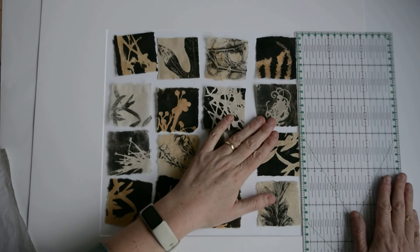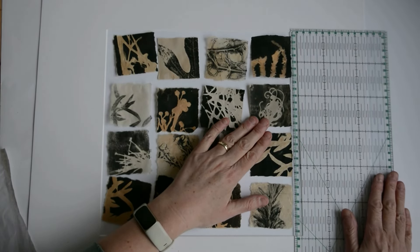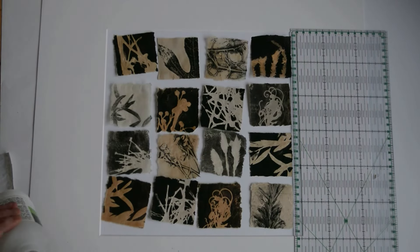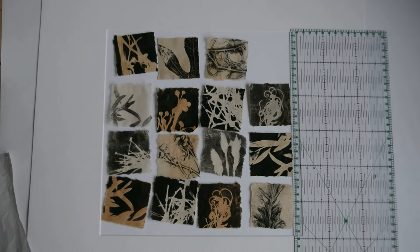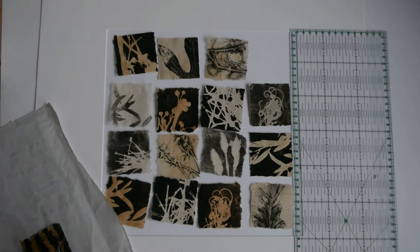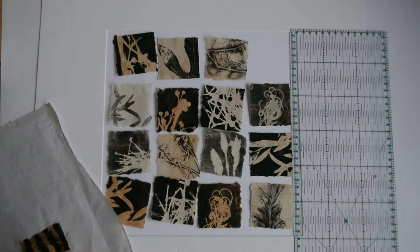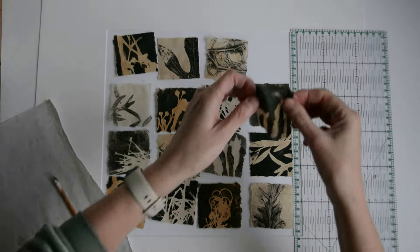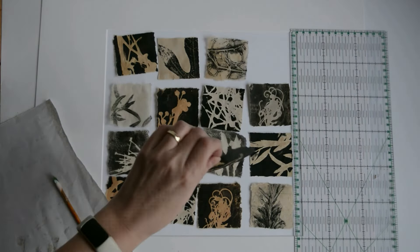So here are my squares. I've played around in terms of the darkness of the background, whether they're a ghost print or not, until I'm satisfied with the arrangement. And I'm using my quilter's ruler as you can see as a guide for placing them down. I'm not going to get them all exactly exactly the same size, and I'm going to do this by eye as well as by ruler. So you can see I've got my mount board down there as a guide as well.